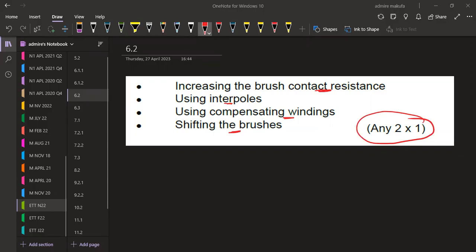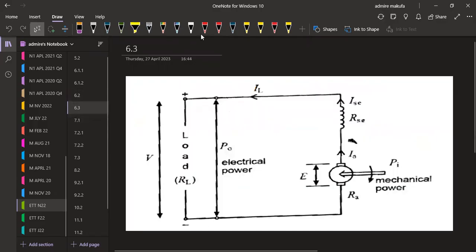On 6.3, we are now given to draw a neat labeled circuit diagram of a series wound DC generator, clearly indicate the load and the direction of the current flow. So that's a series wound DC generator. So this is what we have in this case for a series wound DC generator.